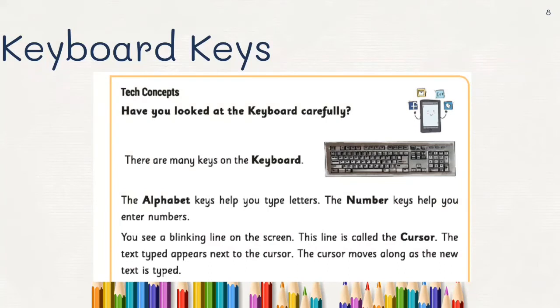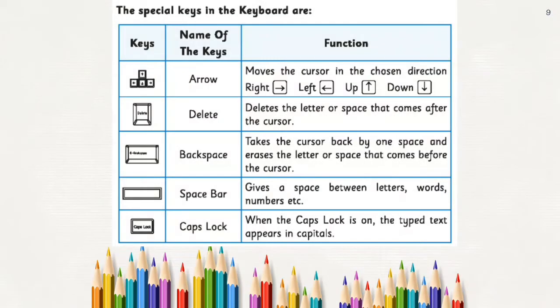Keyboard concepts. If you have a keyboard, there are many keys. There are two types of keys: alphabet keys and number keys. Alphabet keys are A to Z - there are 26 letters. In number keys, there are 10 keys, 0 to 9. On our screen, there is a line called the cursor. The cursor is operating.